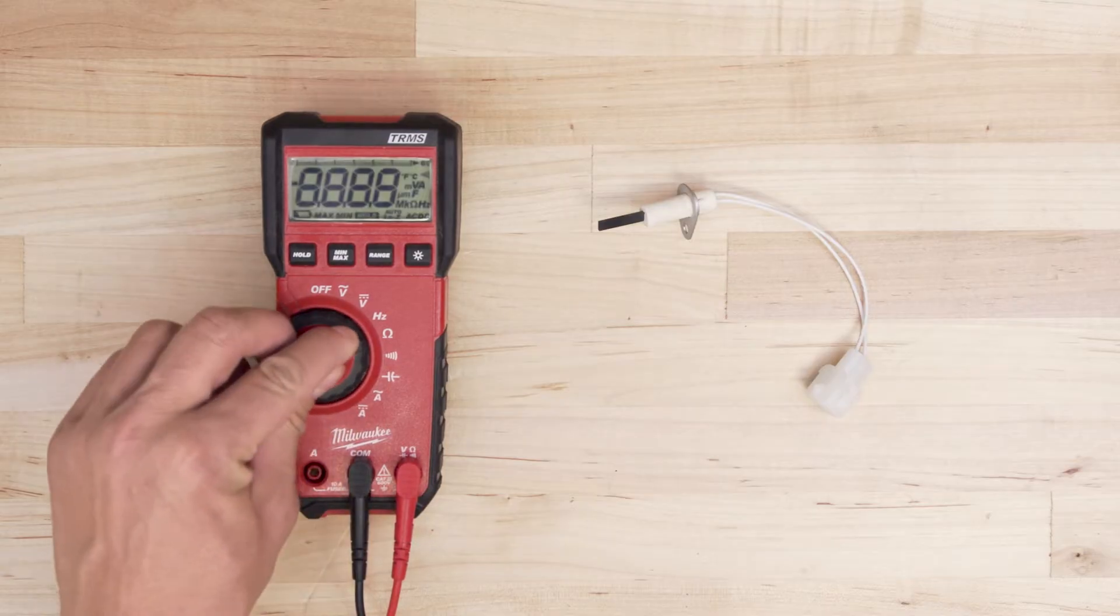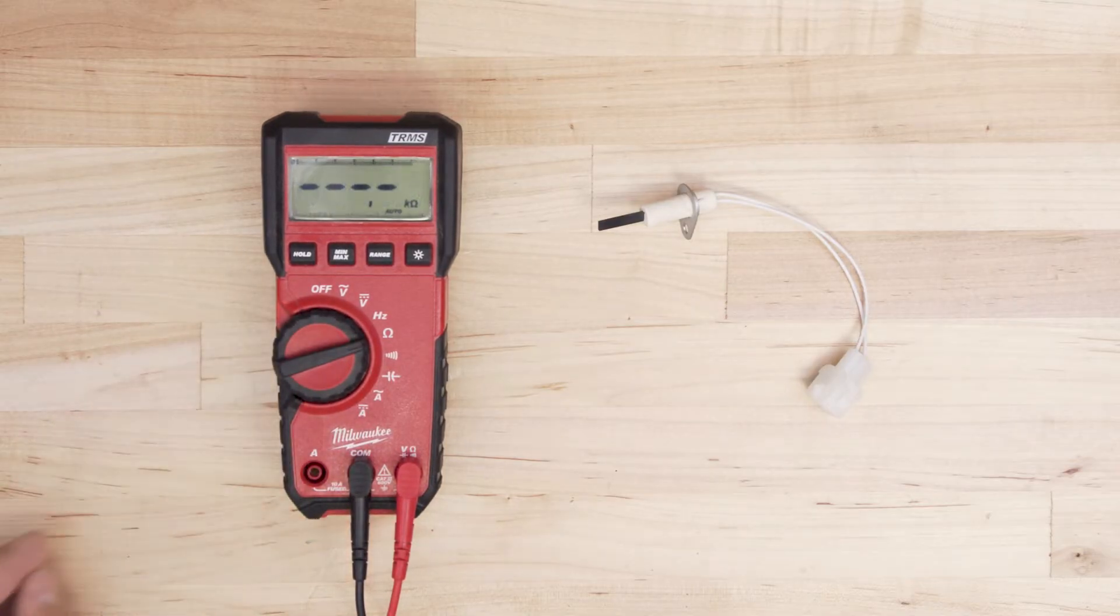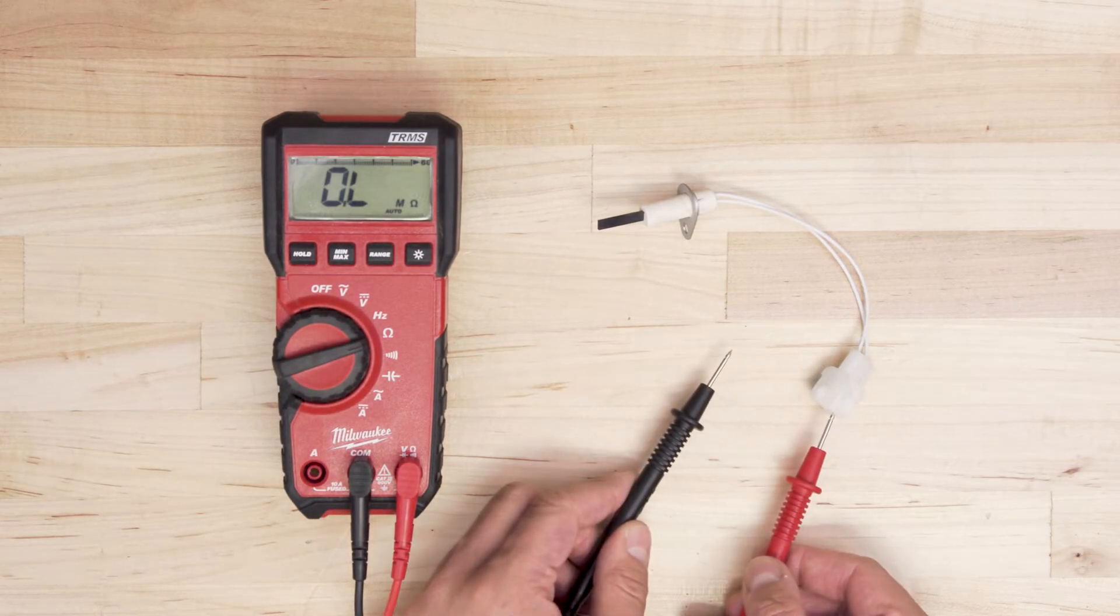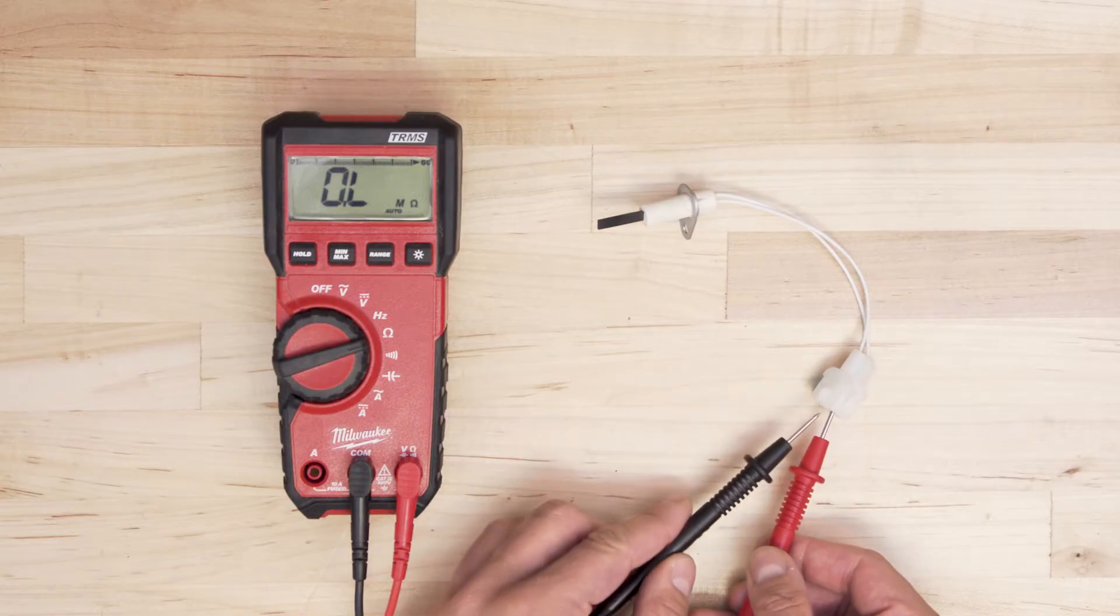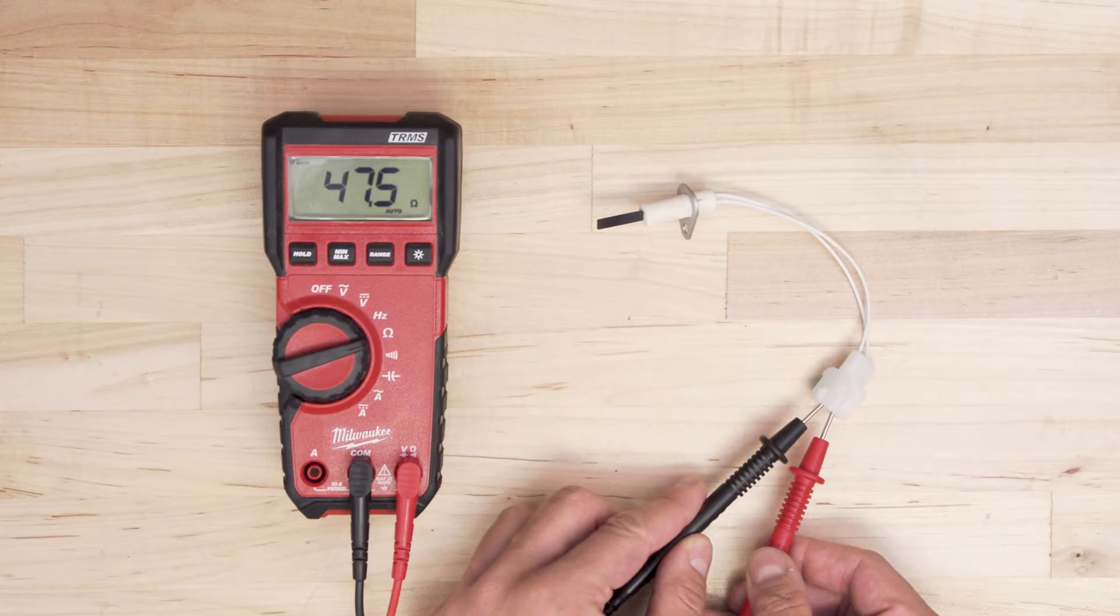Take the multimeter and set it to the lowest ohms of resistance. Now touch the probes to each terminal. If the igniter has continuity, your multimeter should read anywhere from 30 to 200 ohms.